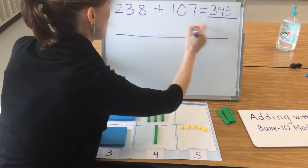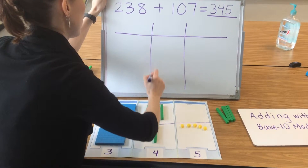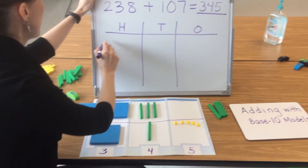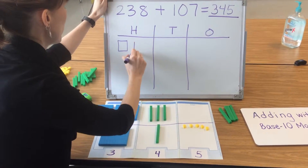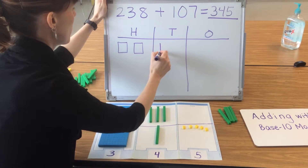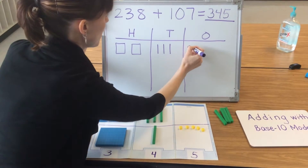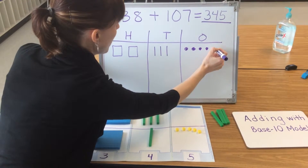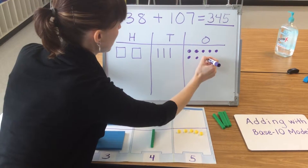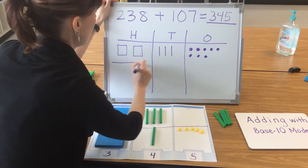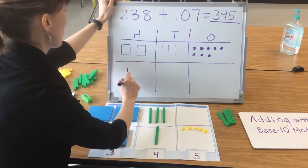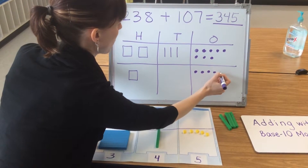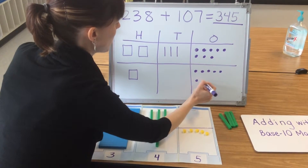Let's check our work by drawing a pictorial model. My ones, my tens, my hundreds. I model 238. Separate my quantities. 107 is 1 hundred, no tens, then: 101, 102, 103, 104, 105, 106, 107.